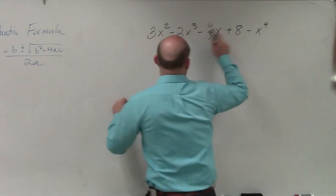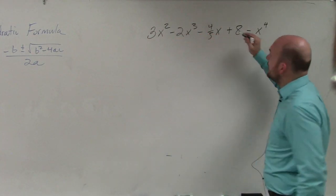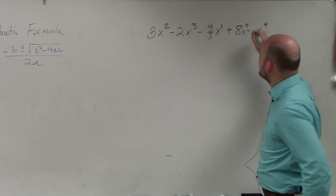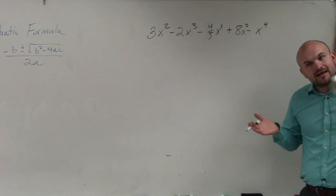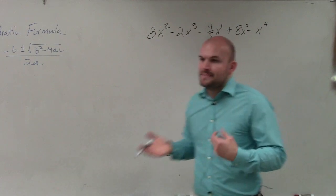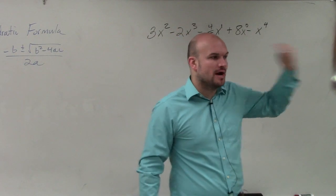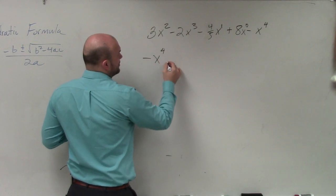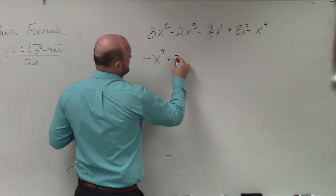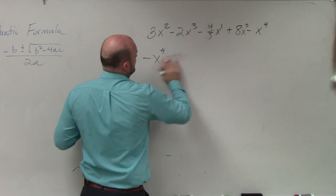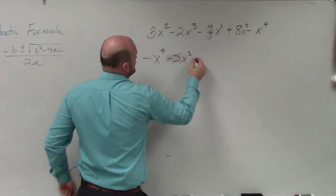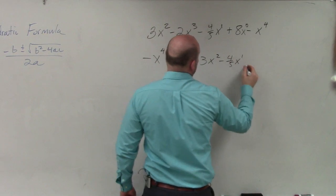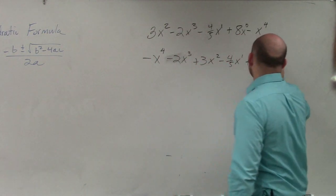So here I have x to the fourth, x cubed, x squared. Here you guys can always write x to the first, and then here I can write x to the zero. So when we're writing this in descending order form, basically what we're doing is starting with the largest power and then going down. Make sure you keep the signs. Negative x to the fourth plus 3, I'm sorry, minus 2x cubed plus 3x squared minus 4 fifths x to the first plus 8x to the zero.